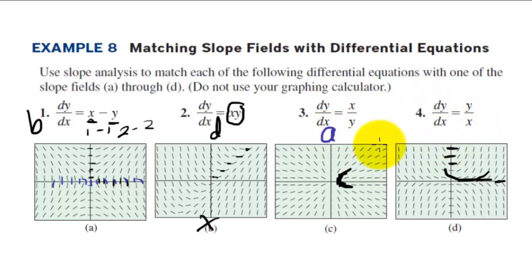And number 4, dy/dx equals y/x. Of course, we've eliminated a, we've eliminated b, and we've eliminated d, so we know c is the answer. But when y is 0, we have horizontal slopes right here, and when x is 0, we have the vertical slopes right here coming up. So this is letter c.